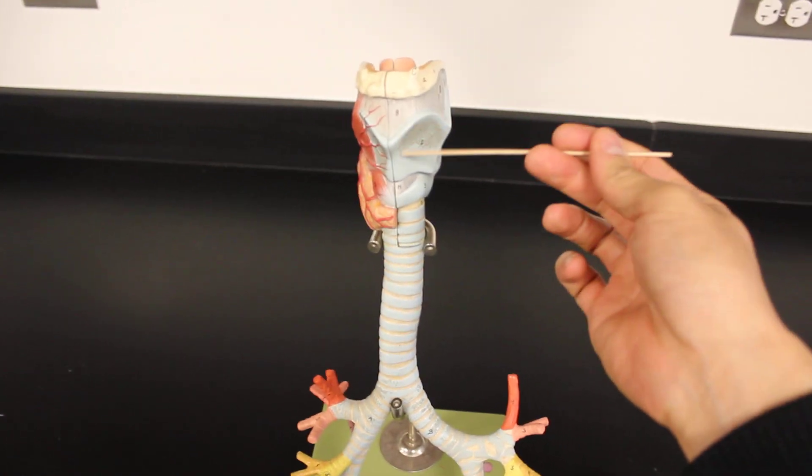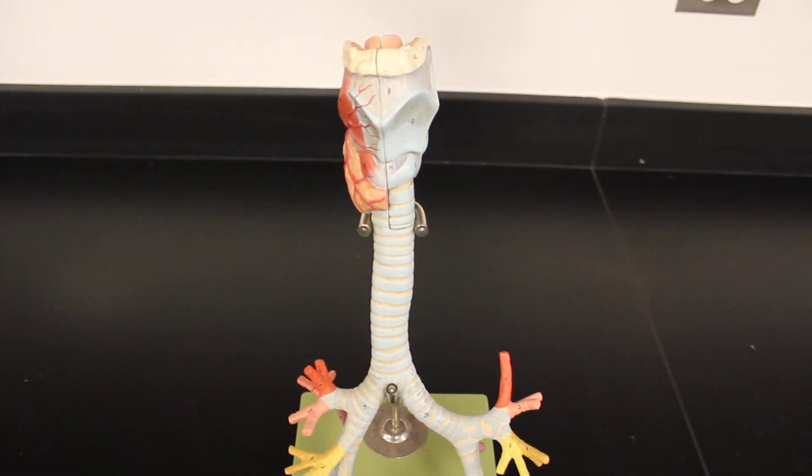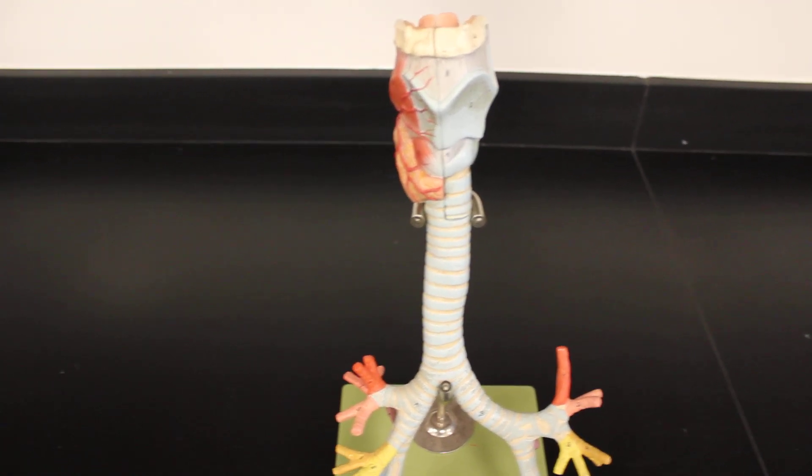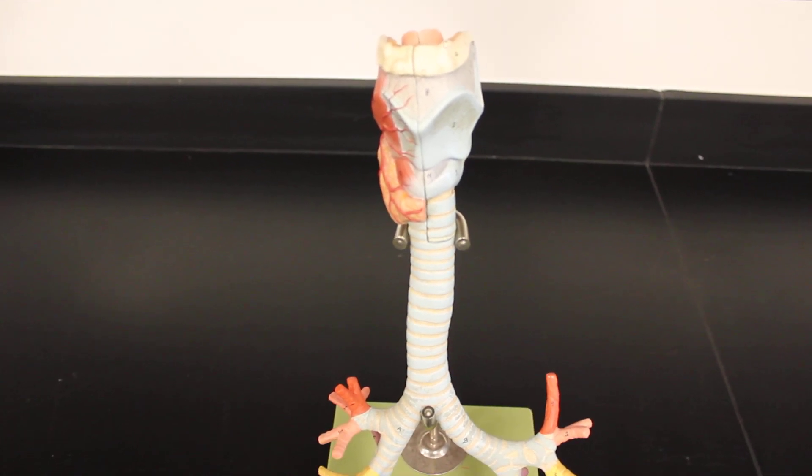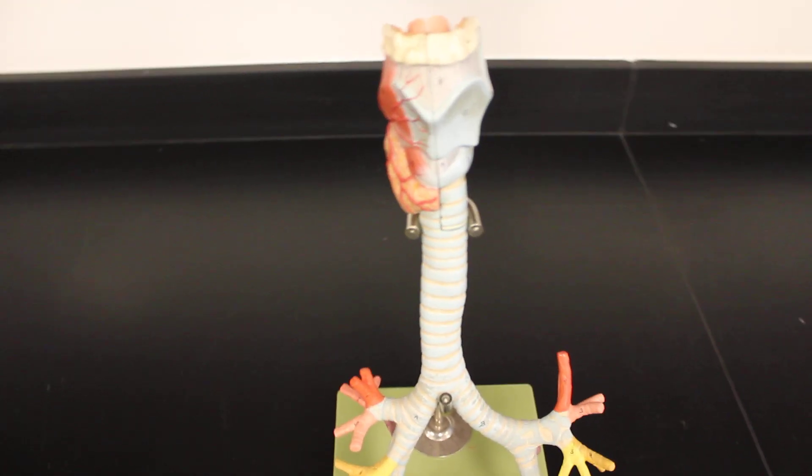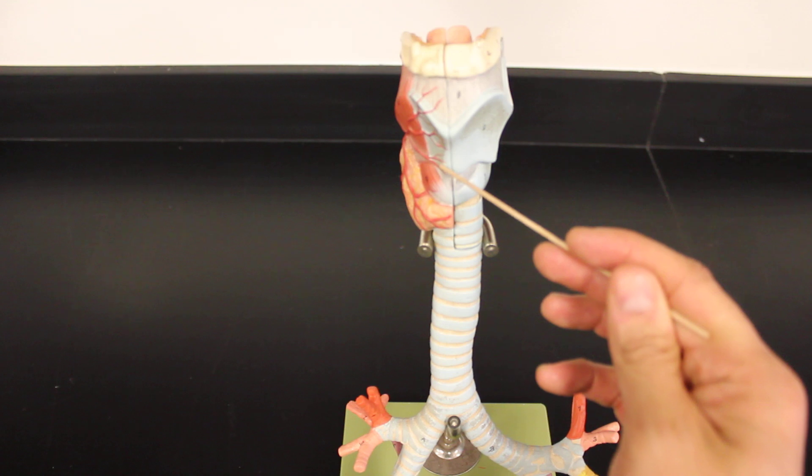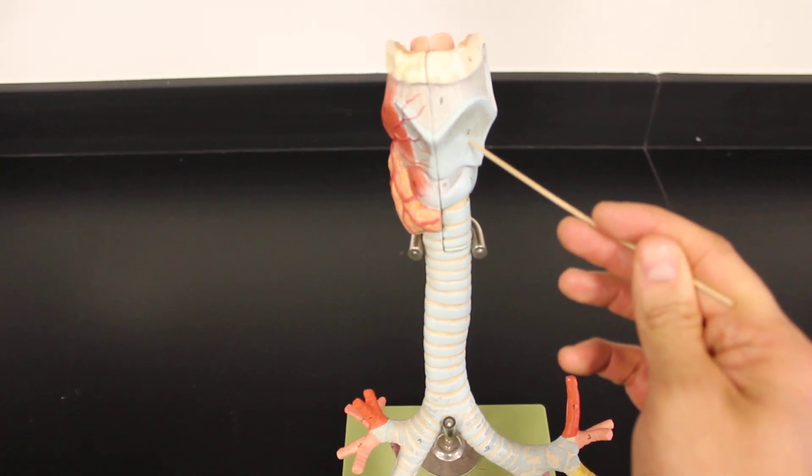So at first we'll take a look at the larynx and remember that the larynx is essentially known as the voice box created out of cartilage. And so we have five different cartilages that our class has the responsibility of knowing.